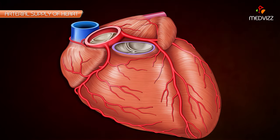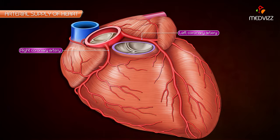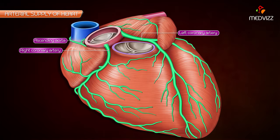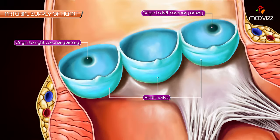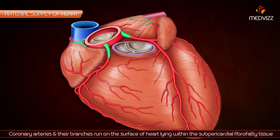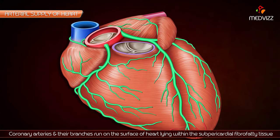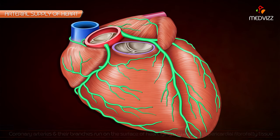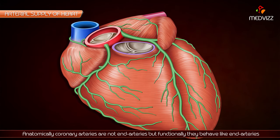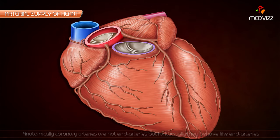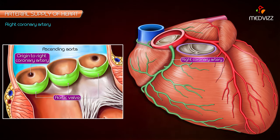The heart is mostly supplied by the two coronary arteries, which arise from the ascending aorta immediately above the aortic valve. The coronary arteries and their branches run on the surface of the heart, lying within the subpericardial fibrofatty tissue. Anatomically, coronary arteries are not end arteries, but functionally they behave like end arteries.